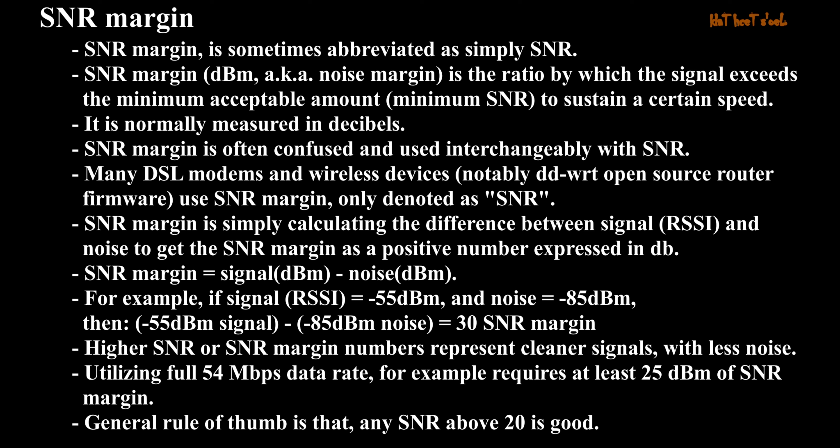For example, if signal (RSSI) equals minus 55 dBm and noise equals minus 85 dBm, then: minus 55 dBm minus (minus 85 dBm) equals 30 SNR Margin. Higher SNR or SNR Margin numbers represent cleaner signals with less noise. Utilizing a full 54 Mbps data rate, for example, requires at least 25 dBm of SNR Margin. The general rule of thumb is that any SNR above 20 is good.